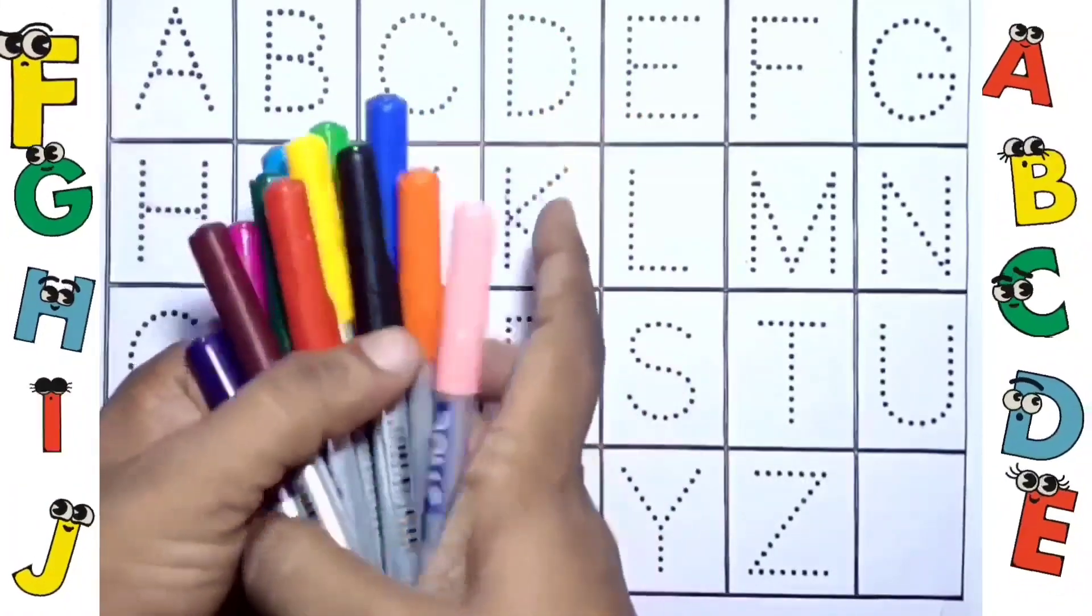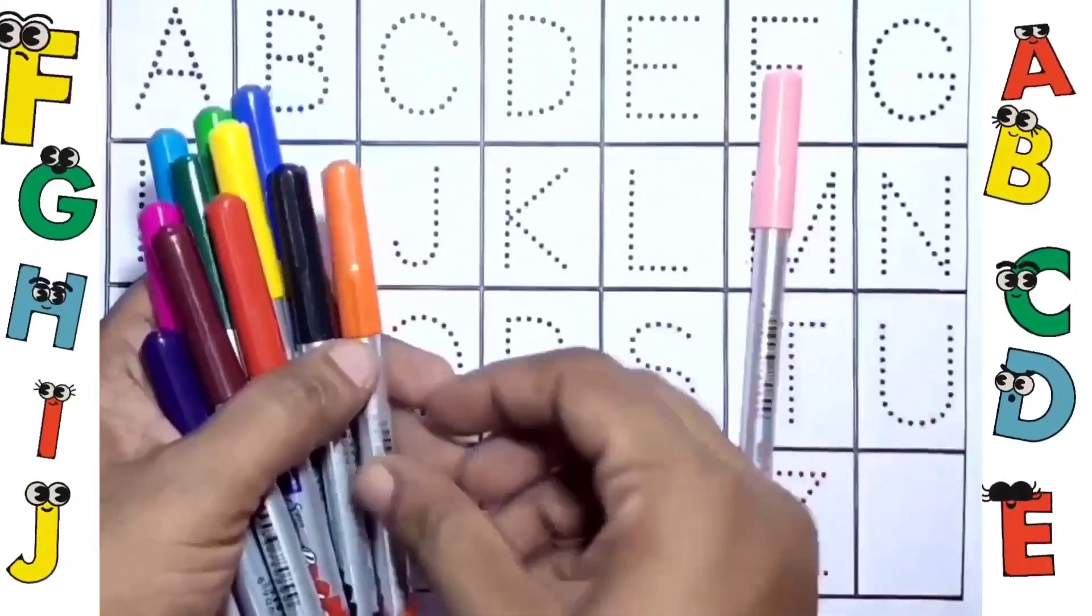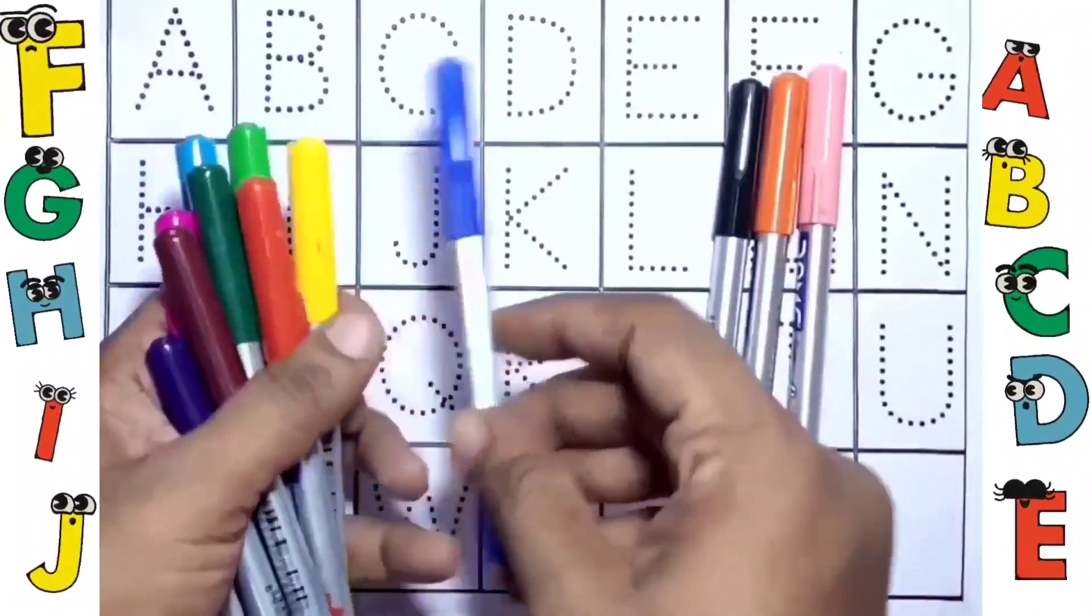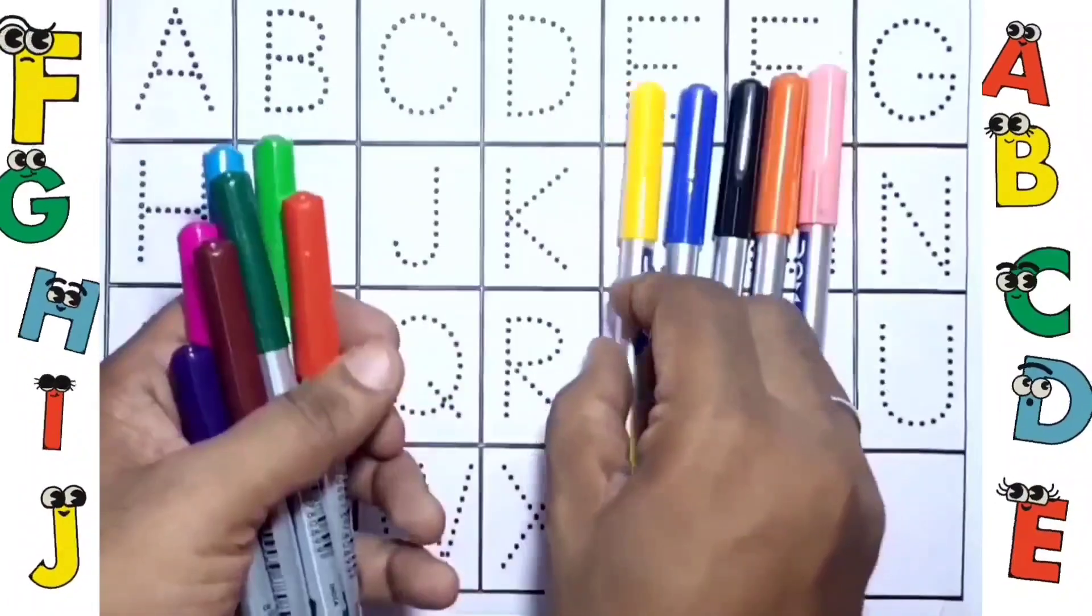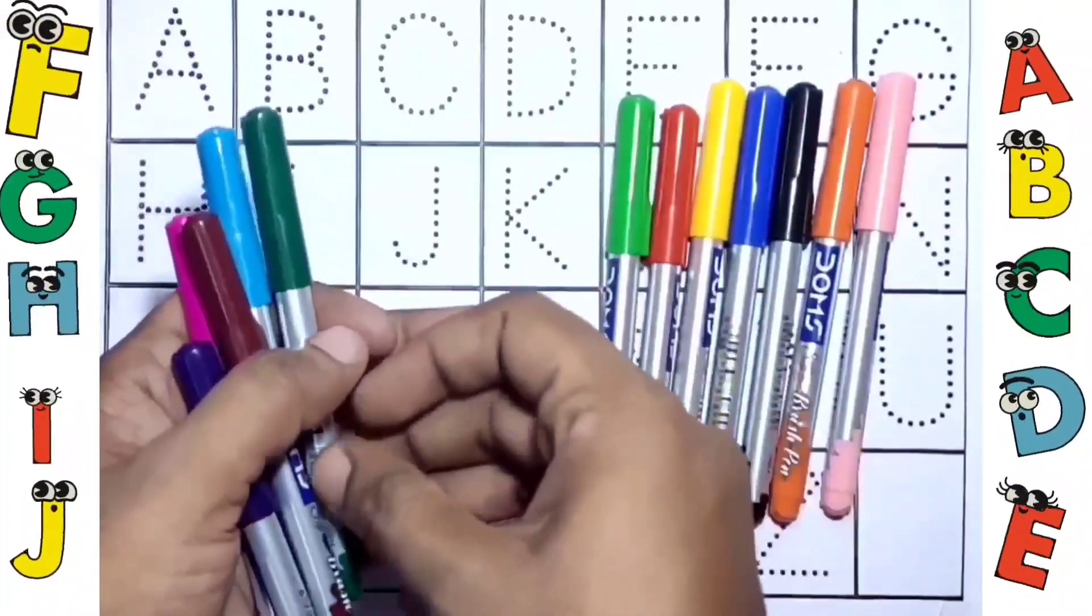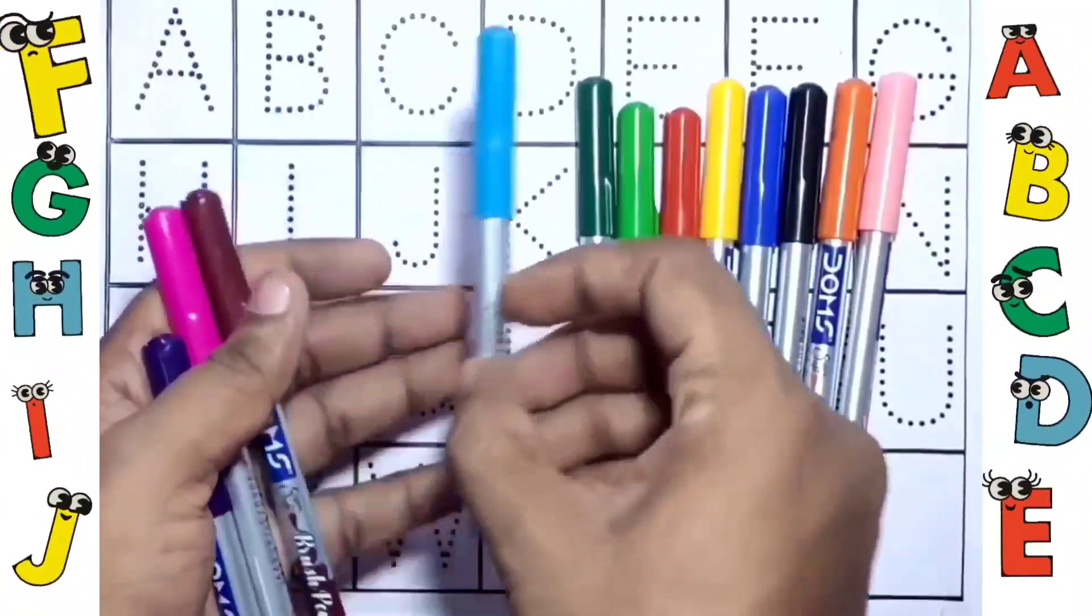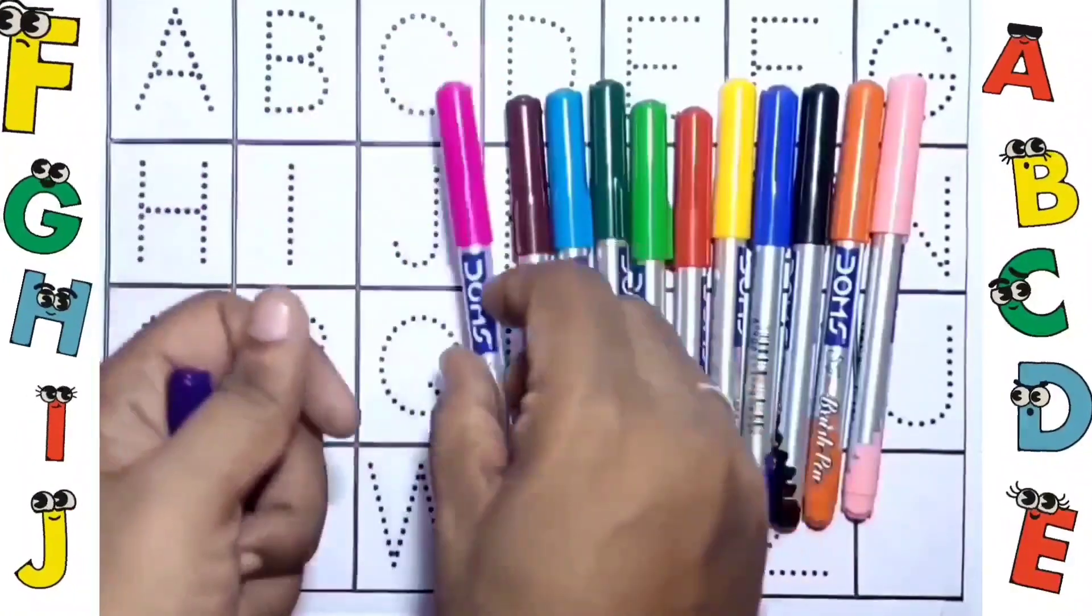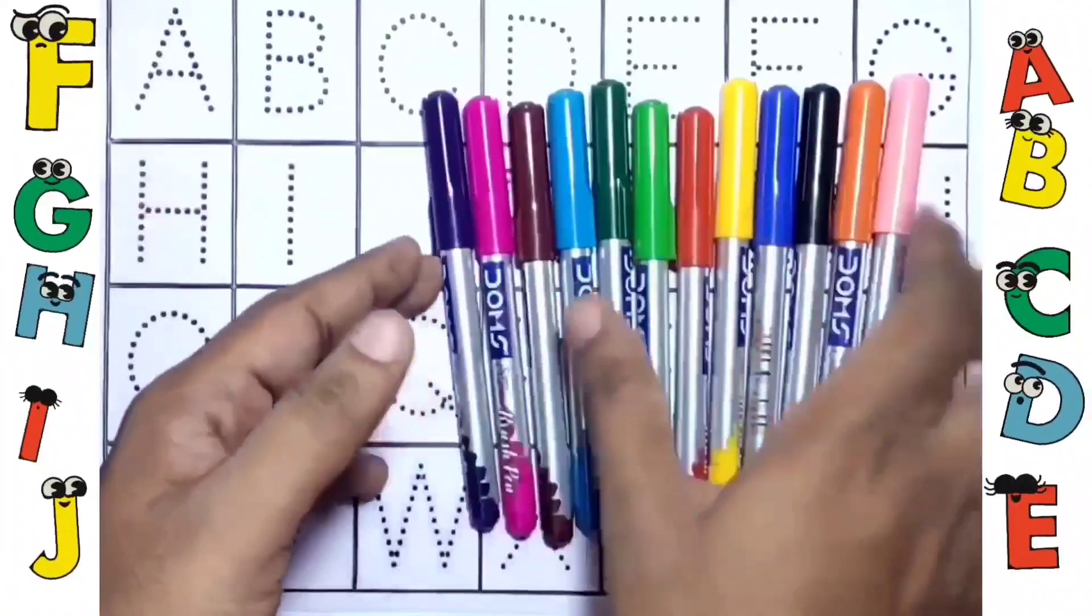Before that let's see the colors. Pink, orange, black color, blue, yellow, red, light green, dark green, sky blue, brown, purple, and violet color.